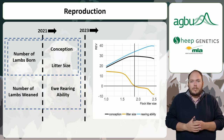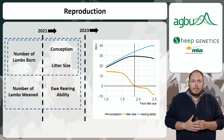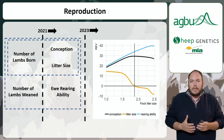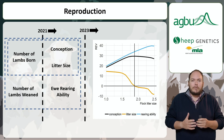In 2021, the reproduction traits evolved from number of lambs born and number of lambs weaned to the component traits of conception, litter size and ewe rearing ability. This means breeders are now in a position to be more targeted in how they improve the net weaning rate of their system.